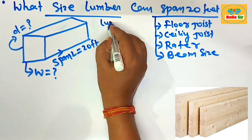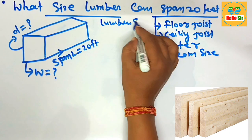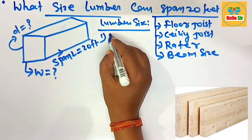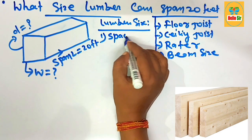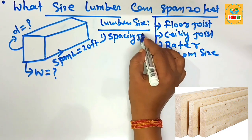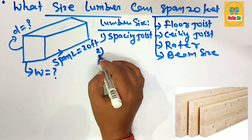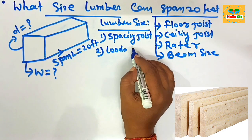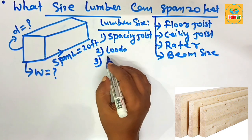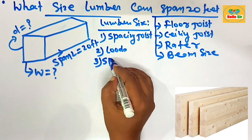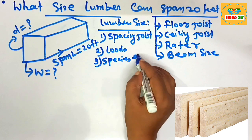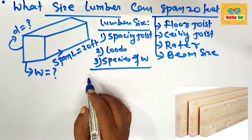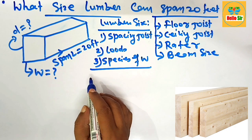The size of lumber depends on many factors. First is the spacing between the joists. Second is what is the live load and dead load of the structure. Third is the species and grade of wood. These are the several factors that determine the lumber size required to span 20 feet in length.